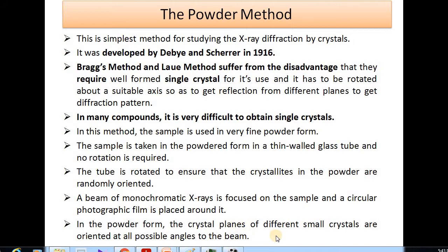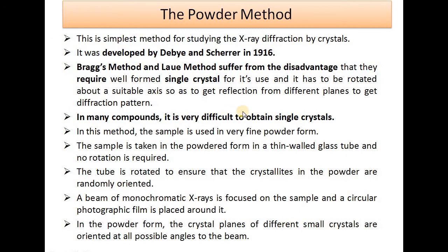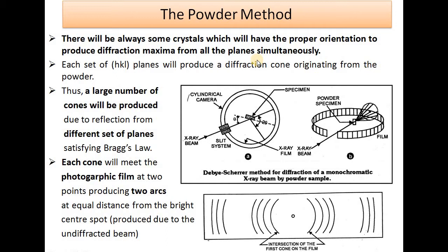Since the sample is in powder form, the crystal planes of different small crystals present in the powder will be oriented at all possible angles to the beam. Therefore, each set of hkl planes will produce a diffraction cone originating from the powder. As there are different planes oriented towards the incident beam, each set of hkl planes will produce a diffraction cone, and we will get a large number of cones from different sets of planes.